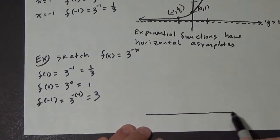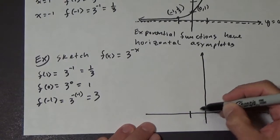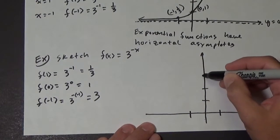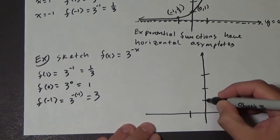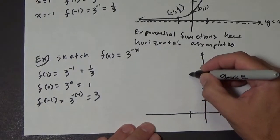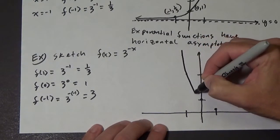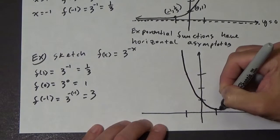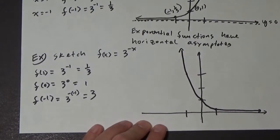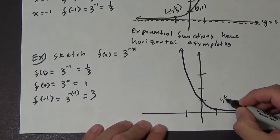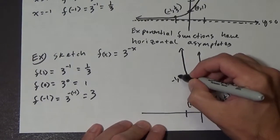So let's see how this one comes out. At 1 we have 1 third, at 0 we have 1, and at negative 1 we have 3. So this thing is going to look something like this. So the points are: 1 and 1 third, 0 and 1, negative 1 and 3.